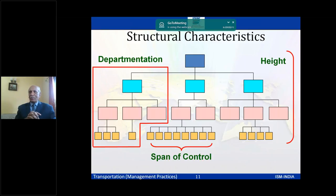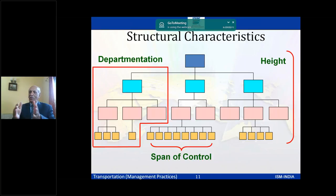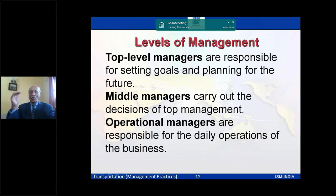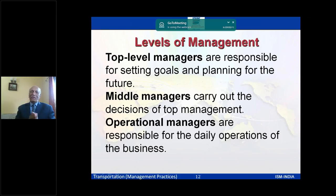Departmentalization means grouping people by function — finance, R&D, marketing, HR — so people of the same skill and background can understand each other better. In any typical organization there are broadly three levels: the top C-level, the middle managers who carry out decisions from top management, and the operations people who on a daily basis deliver the required outputs.